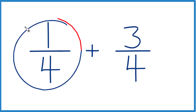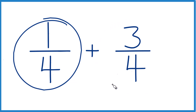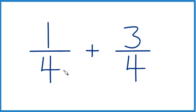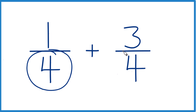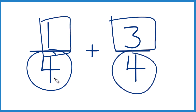Let's add 1 fourth plus 3 fourths. How do we do that? Well, this is actually pretty easy because when we're adding fractions, if the denominator is the same, we just add these numerators together and then bring the denominator across to get our answer.